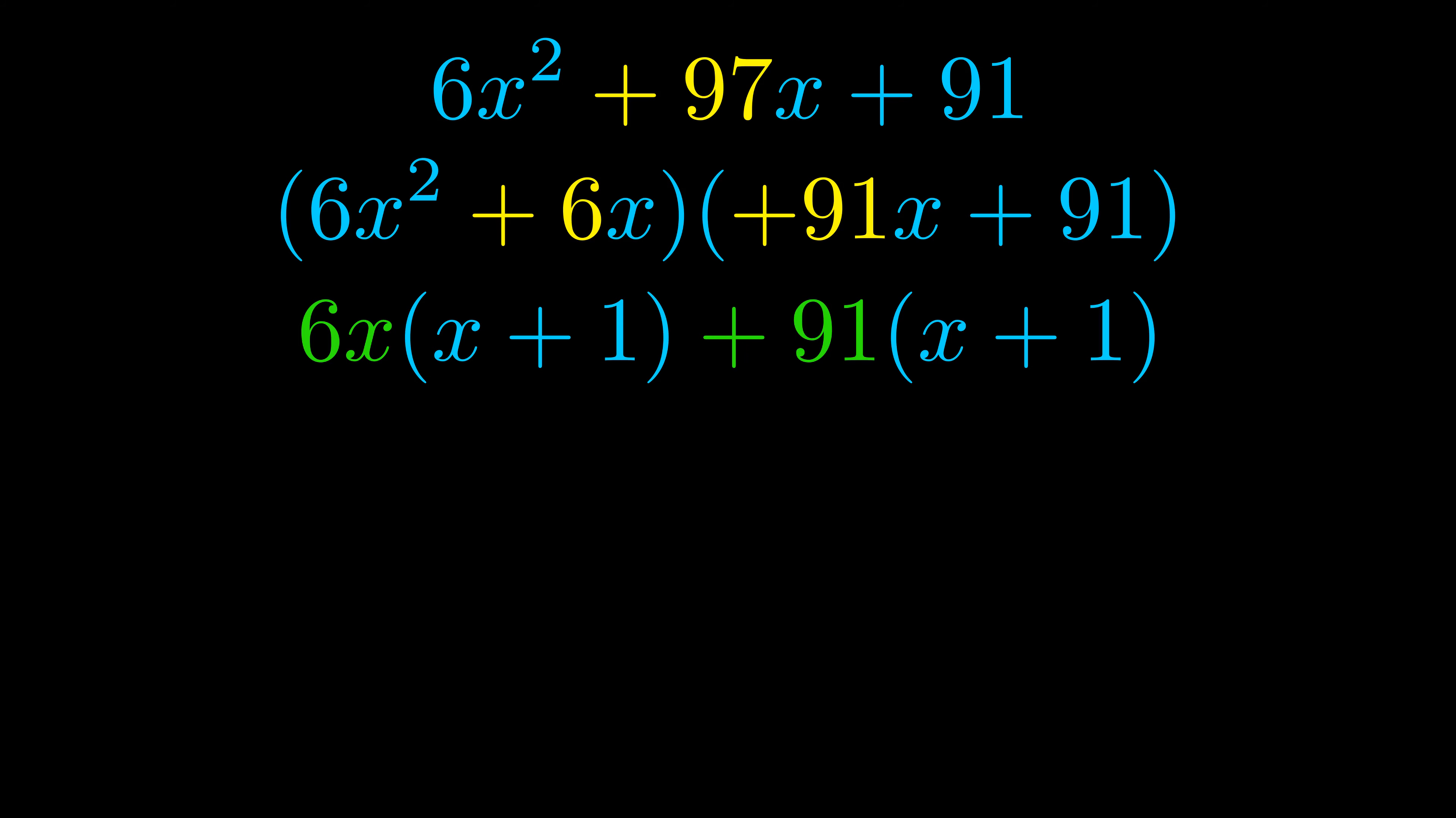Notice also how what remains inside of the parentheses is the same in both cases. The blue values are the same. Those blue values will become one of our factors and we will combine the two green values, the GCFs that we pulled out, to get the other one.